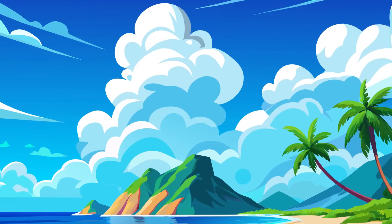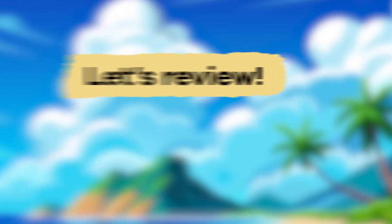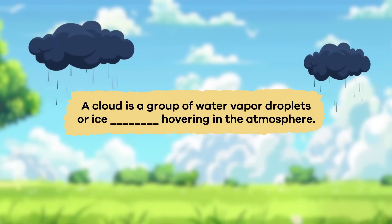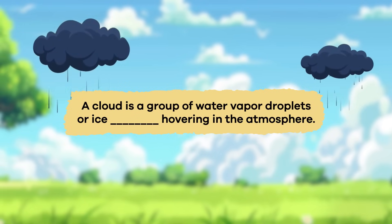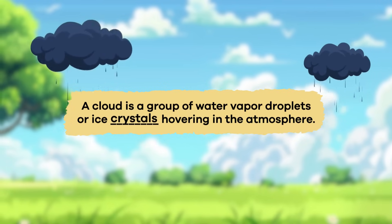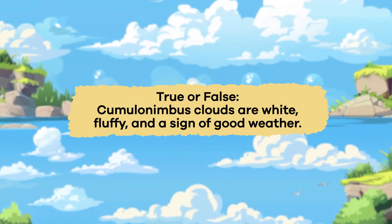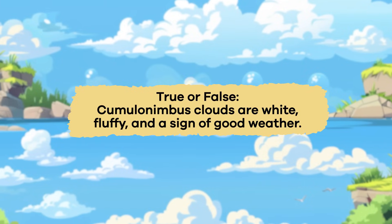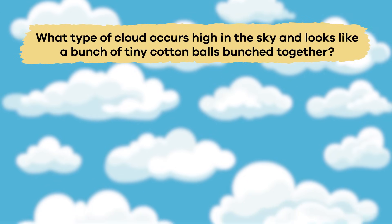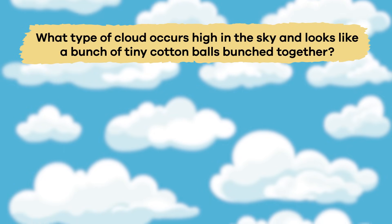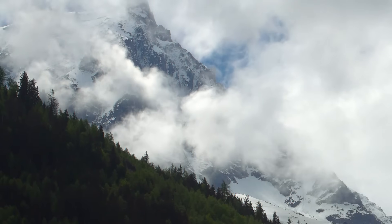We have learned some cool cloudy facts together — let's review! Fill in the blank: a cloud is a group of water vapor droplets or ice _____ hovering in the atmosphere. Crystals! True or false: cumulonimbus clouds are white, fluffy, and a sign of good weather. False! What type of cloud occurs high in the sky and looks like a bunch of tiny cotton balls bunched together? Cirrocumulus! Great job, friends.